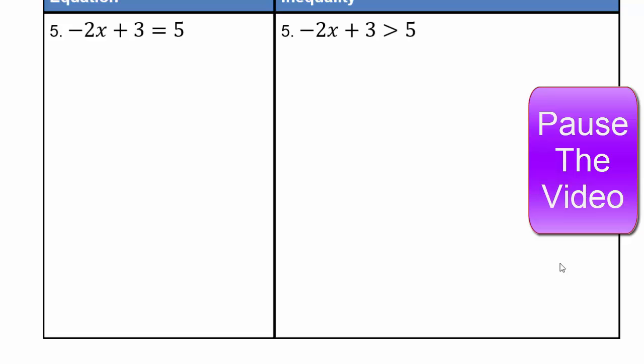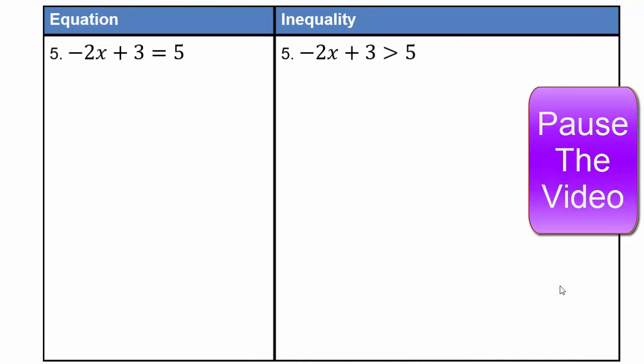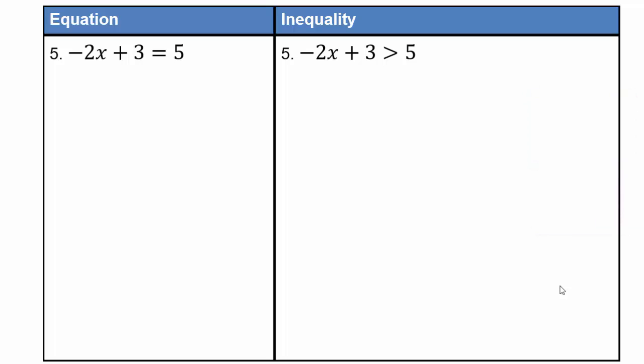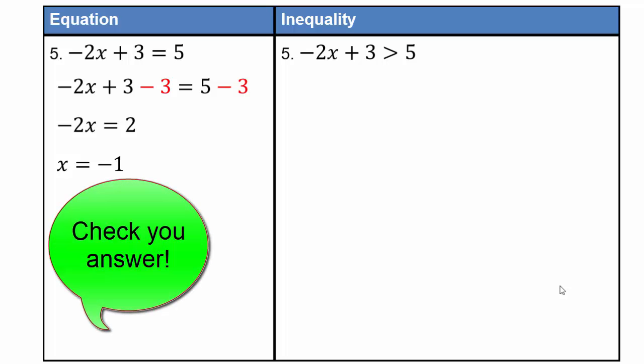Alright, pause the video and see what you can do here. Assuming you've come back, get rid of the 3 and we have negative 2x equals 2. Divide both sides by negative 2, so x equals negative 1. For all equations you must have a Fermi's only column and check your answers to make sure you really got it.